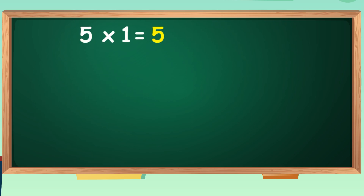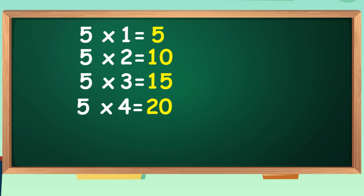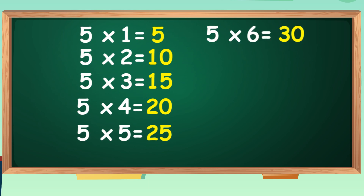Five ones are five. Five ones are five. Five twos are ten. Five twos are ten. Five threes are fifteen. Five threes are fifteen. Five fours are twenty. Five fours are twenty. Five fives are twenty-five. Five fives are twenty-five. Five sixes are thirty. Five sixes are thirty.